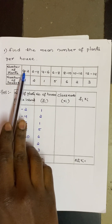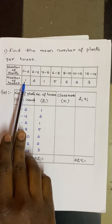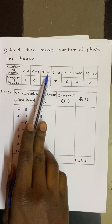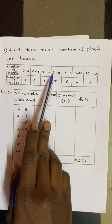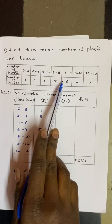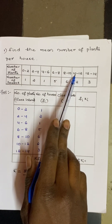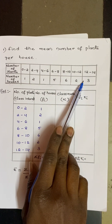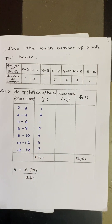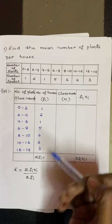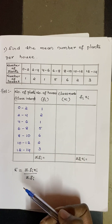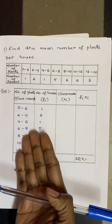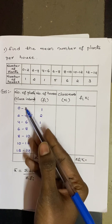The data gives the number of plants and the number of houses: 0–2: 1 house, 2–4: 2, 4–6: 1, 6–8: 5, 8–10: 6, 10–12: 2, 12–14: 3. I'm using the direct method.